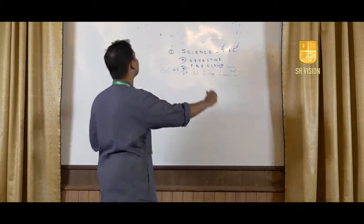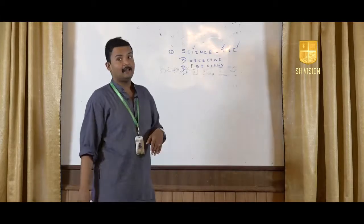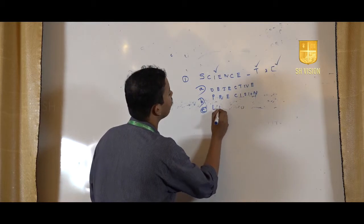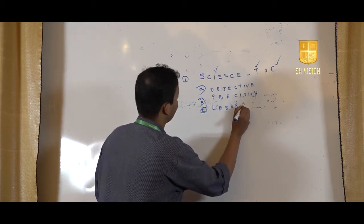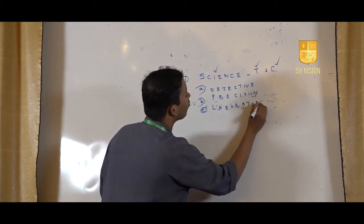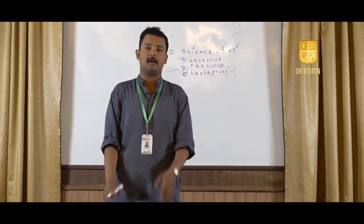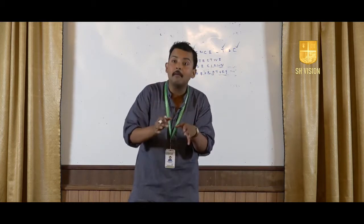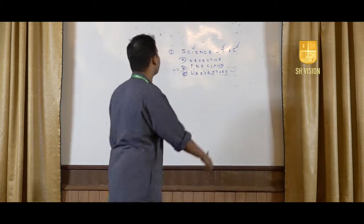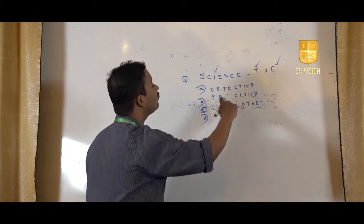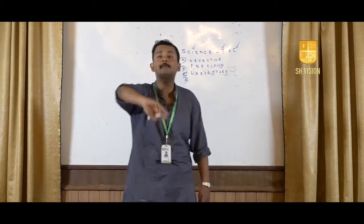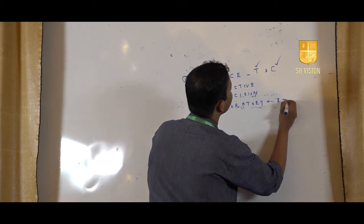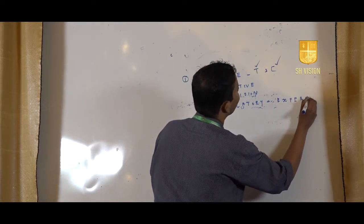When we use the term science, we also have to say that science involves a laboratory. There should be some form of laboratory condition. It need not be the same laboratory as in chemistry or physics, but some form of laboratory characteristic should be present for a science. This is what we call experimentality — which is very important for any branch of knowledge.